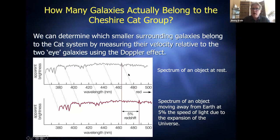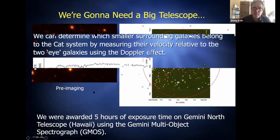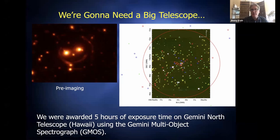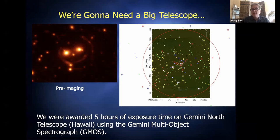We first took a pre-image with Gemini to identify where all the galaxies were and select the best candidates for spectroscopy. On the image, objects with a color other than yellow are galaxies for which we successfully obtained a spectrum; yellow X marks indicate galaxies we couldn't fit on the two masks and had to forgo. We were able to cover quite a few targets across the two masks.